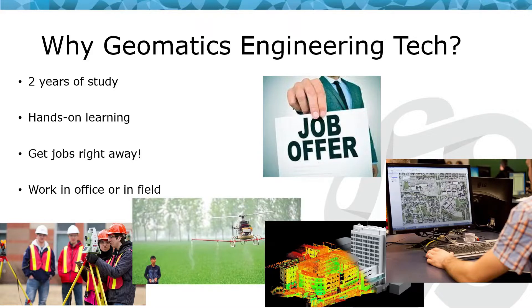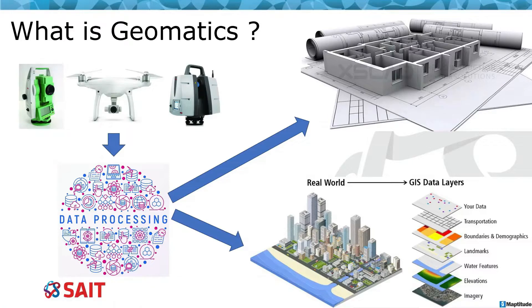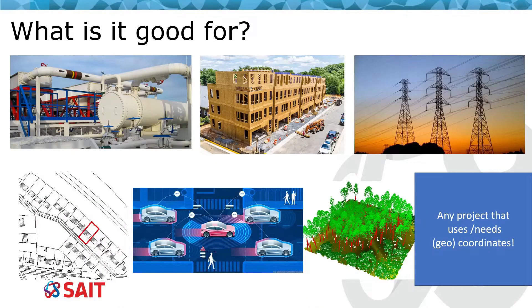Geomatics by definition has three categories. First, data collection using conventional or modern sensors such as GPS, laser scanners, or drones. The second area is about data processing. Lastly is to create 3D models or plans or even modeling the real world in geographic information systems or GIS. As a geomatics professional you could work in oil and gas, construction industry.